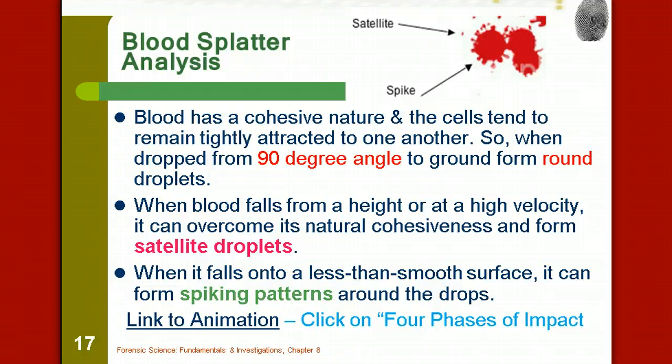When blood falls from a height or at a high velocity, it can overcome that natural cohesiveness and form what we call satellite droplets. Look up at the top, right over here is an example of a satellite droplet. It's a small portion that actually broke away from the larger droplet itself. When it falls onto a less than smooth surface, it can form what we call spiking patterns. These would be considered spiking patterns that are sticking out.